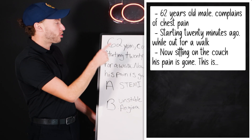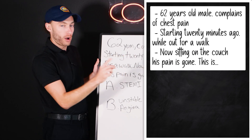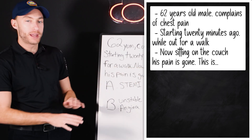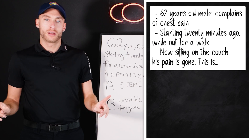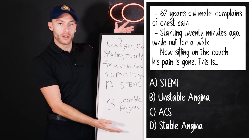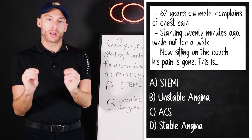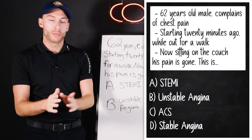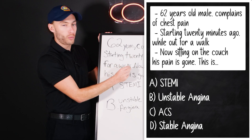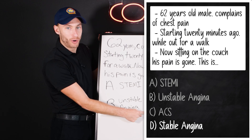We have a 62-year-old male patient who complained of chest pain starting 20 minutes ago while out for a walk. New onset chest pain 20 minutes ago, now sitting on the couch, the pain is gone — zero out of ten. If the pain goes away at rest, the answer is D: stable angina.